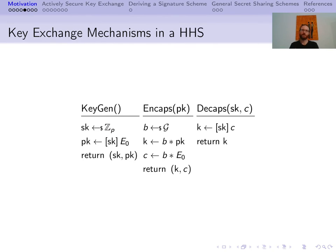A key exchange mechanism in the context of a hard-homogeneous space could look like this. For key generation, we sample the secret key from Z modulo P and the public key is simply the SK applied to a publicly known and fixed E0. For the encapsulation protocol, we sample a random B from G. The ephemeral key K is simply B connected to the public key, and the ciphertext is B applied to E0. For decapsulation, we simply apply the secret key to the ciphertext, which gives us the key K.